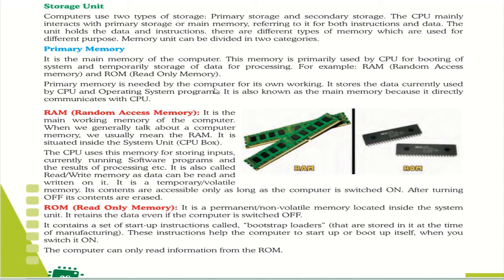Under primary memory there are two types: RAM (Random Access Memory) and ROM (Read Only Memory). Primary memory is known as main memory and is primarily used by the CPU for booting up or running the system, and for temporarily storing data during processing. RAM is the main working memory of the computer. When we talk about computer memory we usually mean RAM. The CPU uses RAM for storing inputs, currently running software programs, and results of processing. It is also called read/write memory, and is known as temporary or volatile memory — meaning its contents are erased after switching off.